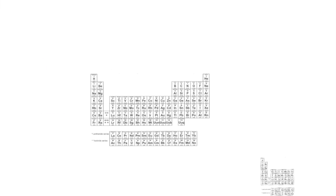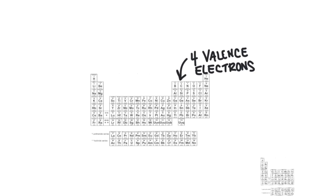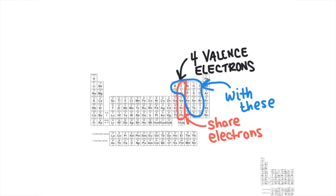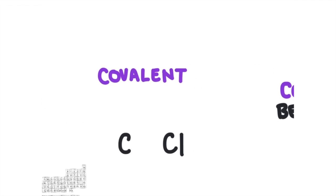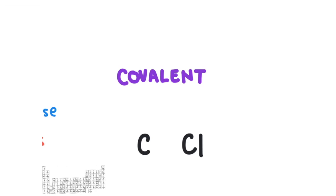What about group 4? Group 4 elements have 4 valence electrons — will they lose 4 or gain 4? Group 4 elements generally get their electrons through a different process called sharing. Shared electrons form covalent bonds. Covalent bonds form when nonmetals bond with other nonmetals. Since both nonmetals are trying to gain electrons, if two nonmetals react and they're both trying to steal each other's electrons, they end up just sharing their electrons — it's a win-win situation.